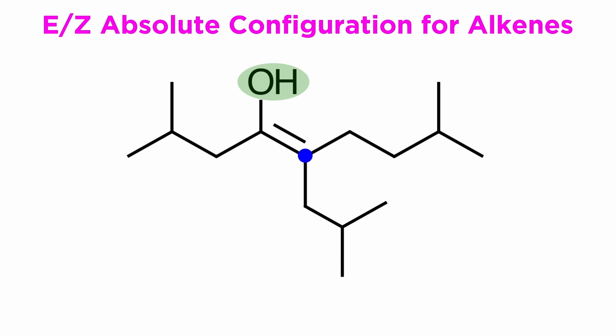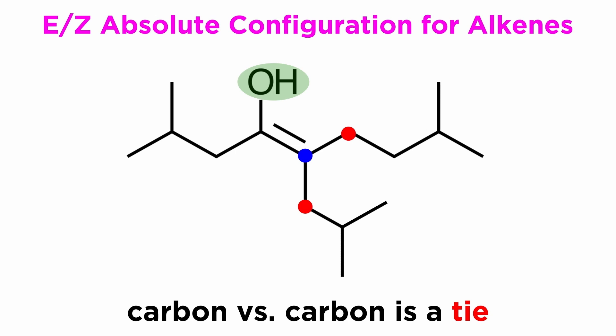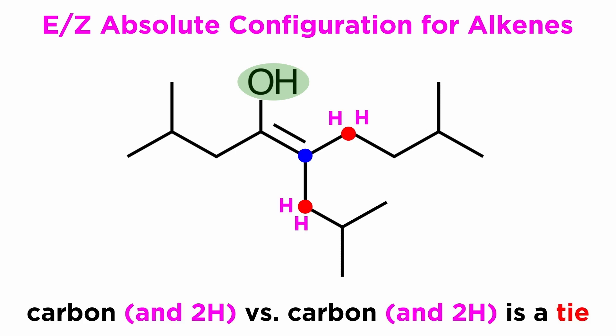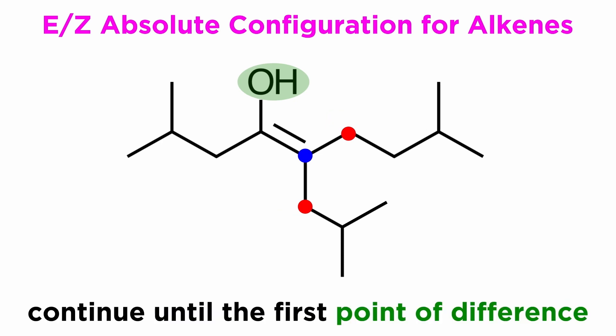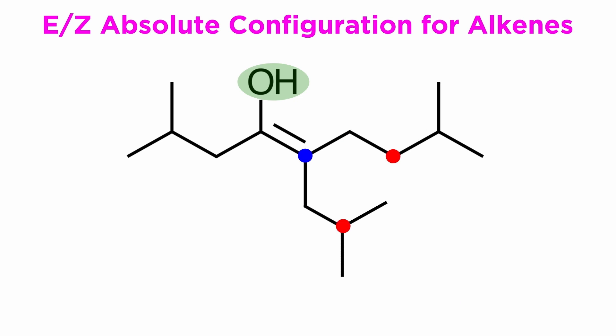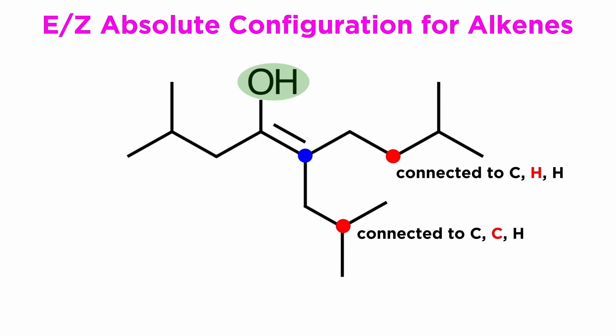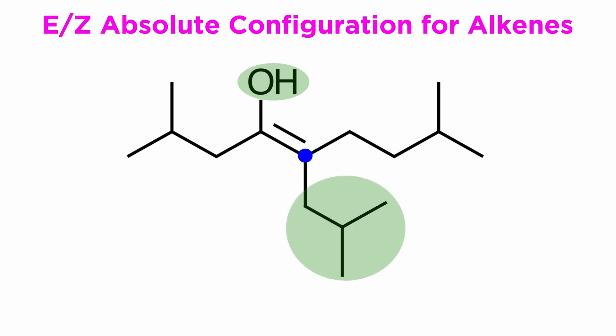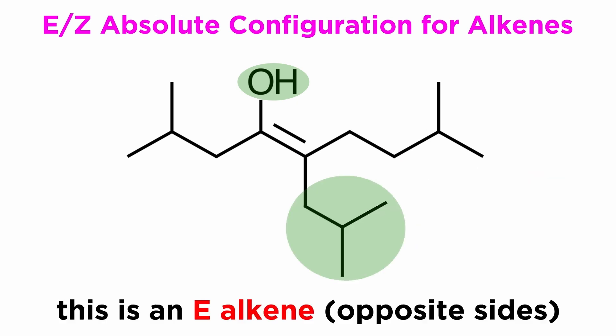On the other side we have two carbon chains, which means we are starting with two identical carbon atoms, both of which are bonded to two hydrogens. That means we must continue until we find the first point of difference. Continuing on to the next carbon, we see that this one is connected to two carbons and one hydrogen, as opposed to this one which is connected to one carbon and two hydrogens. Carbon beats hydrogen, so this group ends up taking the higher priority. Because it is opposite the hydroxyl with respect to the pi bond, this is an E-alkene.